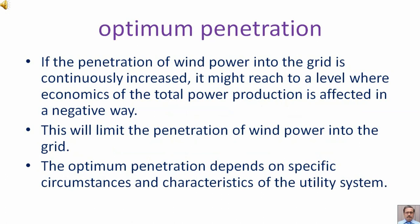If the penetration of wind power into the grid is continuously increased, it might reach a level where economics of the total power production is affected in a negative way. This will limit the penetration of wind power into the grid. The optimum penetration depends on specific circumstances and characteristics of the utility system.